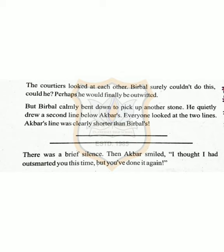The courtiers looked at each other — Birbal surely couldn't do this, could he? Perhaps he would finally be outwitted. But Birbal calmly bent down, picked up another stone, and quietly drew a second line below Akbar's. Everyone looked at the two lines — Akbar's line was clearly shorter now. Birbal had simply drawn a bigger line next to it. Akbar smiled: 'I thought I had outsmarted you this time, but you have done it again.' Hope dear children you understood this activity. Thank you for watching the video.